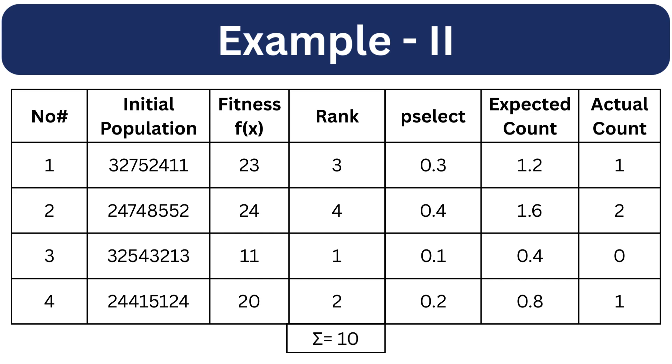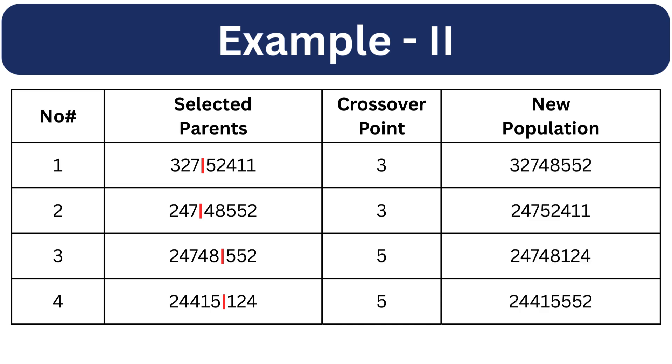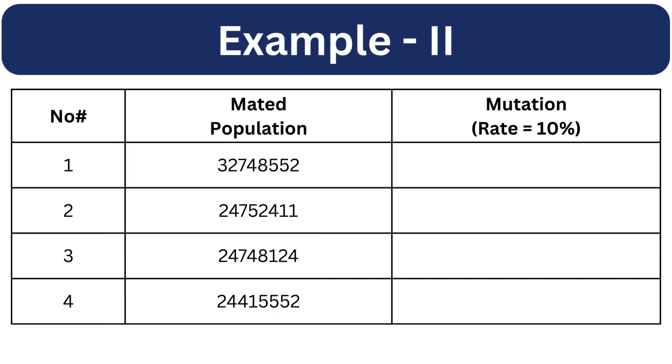Now the selected individuals will go through crossover and mutation. The mutation rate is 10% which means 3 genes in this population will be mutated. We are using random bit change mutation which means the selected bit will be replaced with any value between 1 and 8. So 1 is replaced with 3, 4 is replaced with 5 and 5 is replaced with 7.